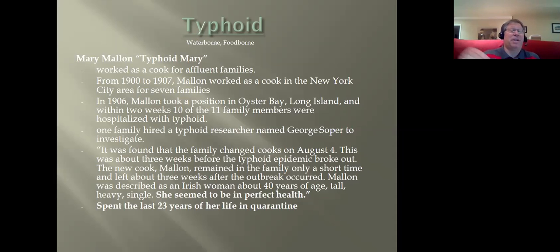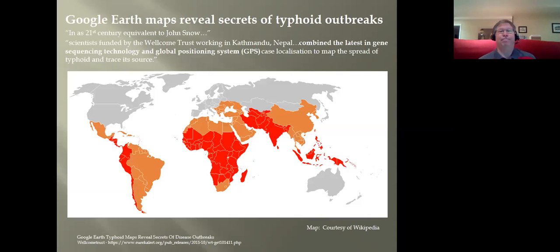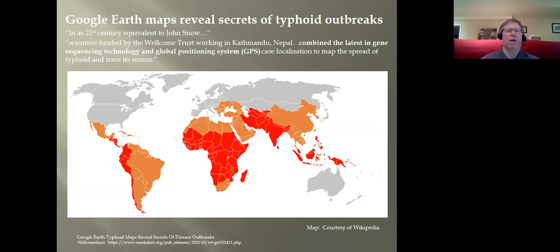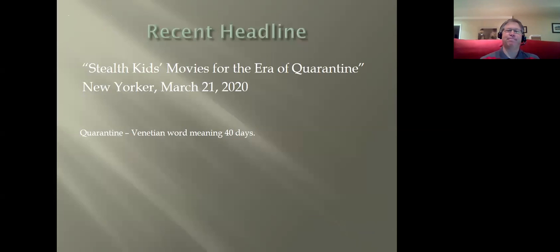That triggered another connection to today: quarantine. Scientists are using Google Earth to map out cholera outbreaks in Nepal, using gene sequencing and global positioning systems to localize where typhoid is spreading from its source — what some people are calling the 21st-century equivalent of John Snow.